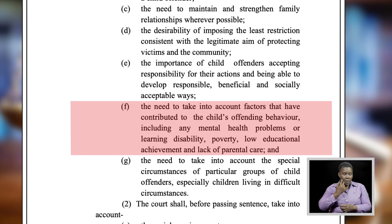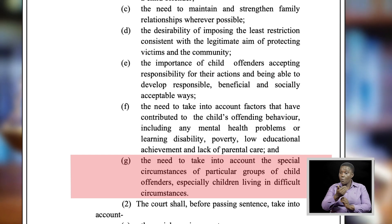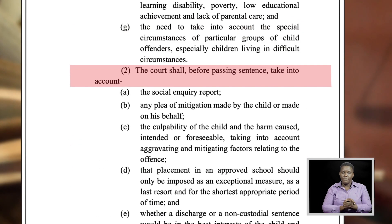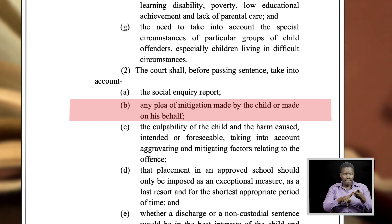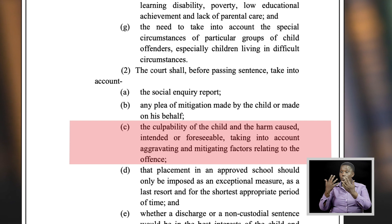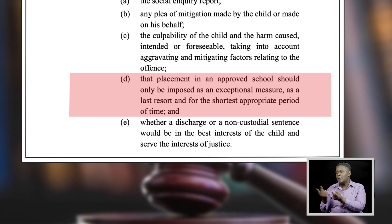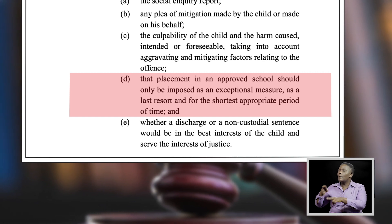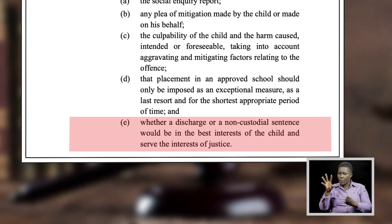The court shall also take into account factors that have contributed to the child's offending behavior, and the special circumstances of particular groups of child offenders, especially children living in difficult circumstances. Before passing sentence, the court shall take into account: the social inquiry report; any plea of mitigation made by the child or on his behalf; the culpability of the child and the harm caused; the fact that placement in an approved school should only be imposed as an exceptional measure and last resort for the shortest appropriate period; and whether a discharge or non-custodial sentence would be in the best interest of the child and serve the interests of justice.